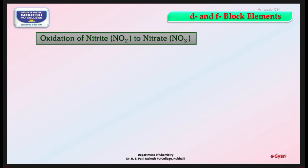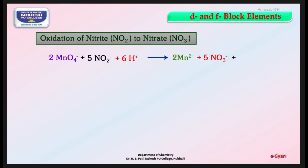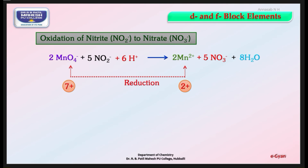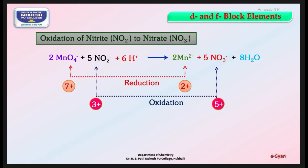Oxidation of nitrite (NO2⁻) to nitrate (NO3⁻): 2MnO4⁻ + 5NO2⁻ + 6H⁺ → 2Mn²⁺ + 5NO3⁻ + 8H2O. The change in oxidation number of Mn from +7 to +2 is reduction; the change in oxidation number of nitrogen from +3 to +5 is an increase, so the process is oxidation. Students can cross-verify the oxidation numbers.